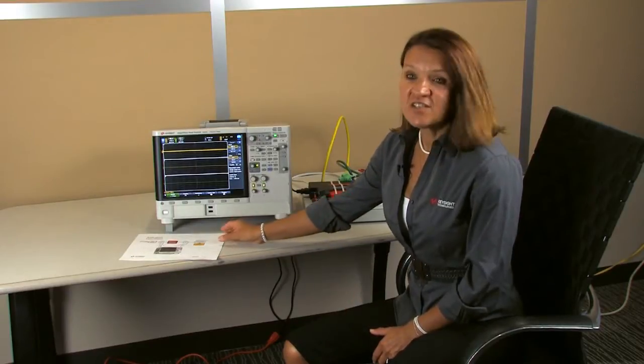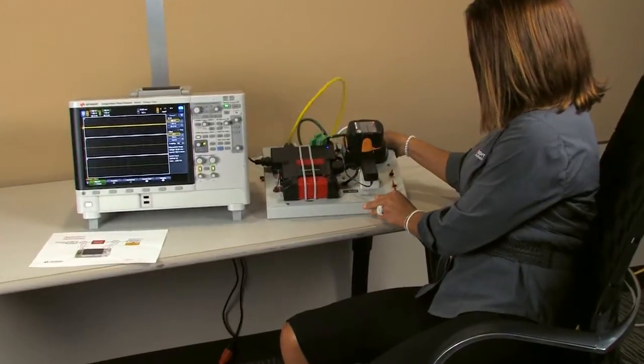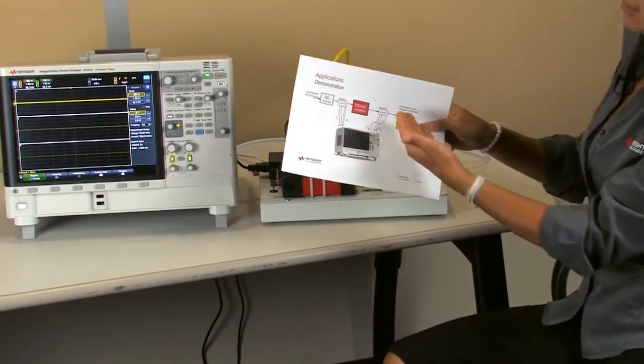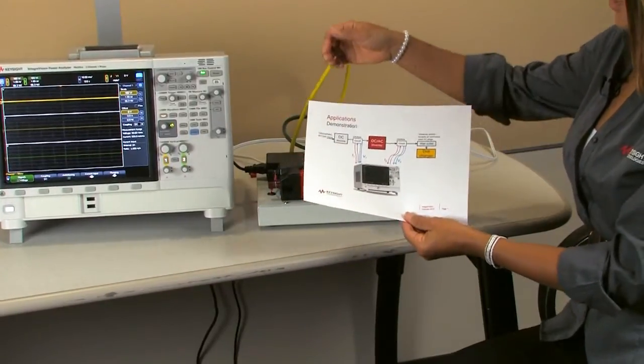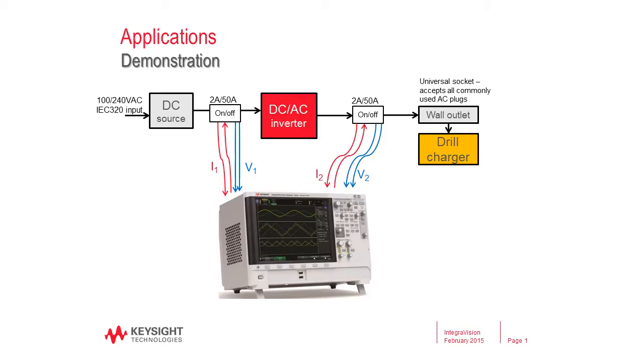For that reason we built together our demo kit board which has on it several devices as you can see. What we evaluate here today is this DC-AC inverter. We need to feed it a DC 12 volt signal and on output we load it with this battery charger.